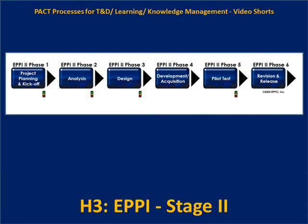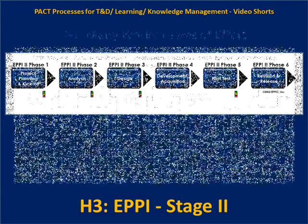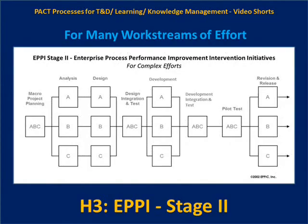Whereas EPI Stage 2 can look very streamlined and simple, your set of interventions that you may need to project manage and conduct might be much more complex. You might have several workstreams — Workstream A, B, and C. As you do your macro project planning on the front end, that will lead to doing analysis of A, B, and C to specify all the specific requirements, then do designs to meet those requirements. But then you may need to do an integration test of the designs themselves — not simply A, B, and C separately, but together.